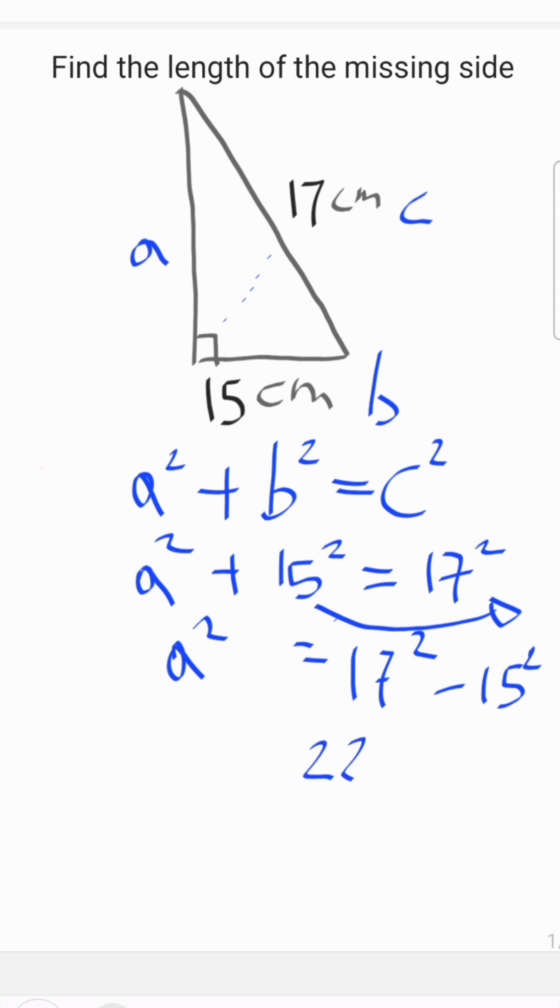17 squared is 289 and subtracting 225. This means that a squared is equal to 289 minus 225, which is 64.